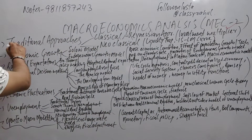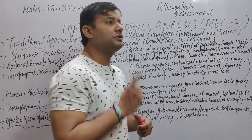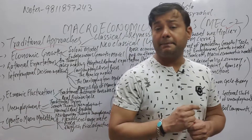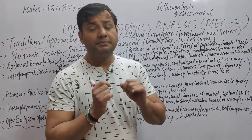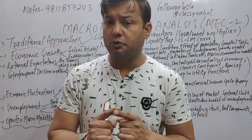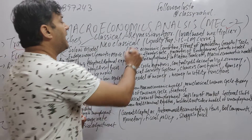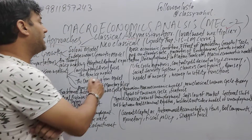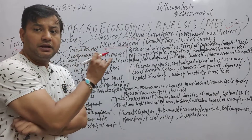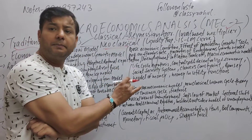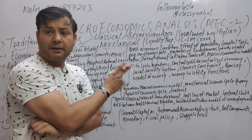Coming to the first half: the traditional approach. What does the traditional approach mean? The traditional approach refers to Keynes' theory. This question is confirmed in the paper. The first question will be on the classical or Keynesian approach. The second part is the new classical or the liquidity trap — no more than new classical approach.